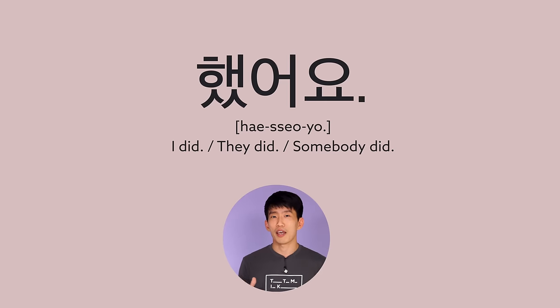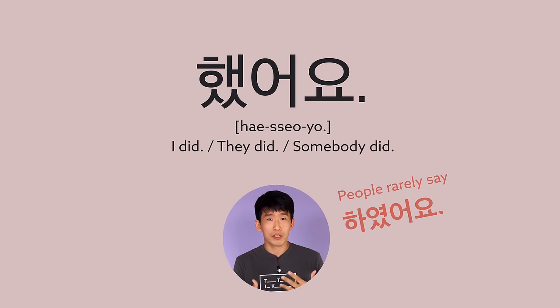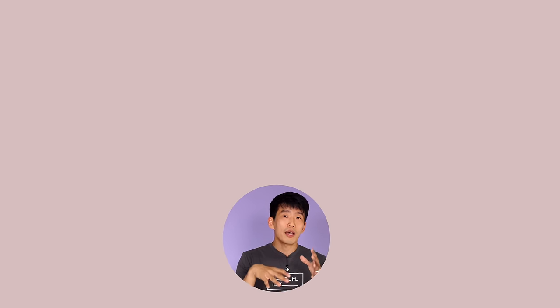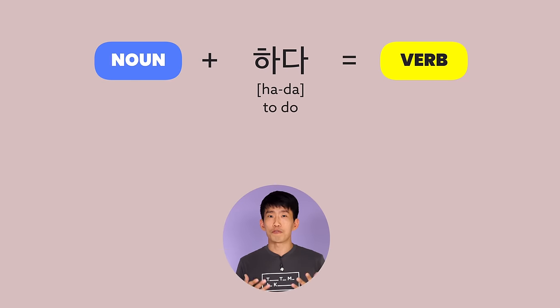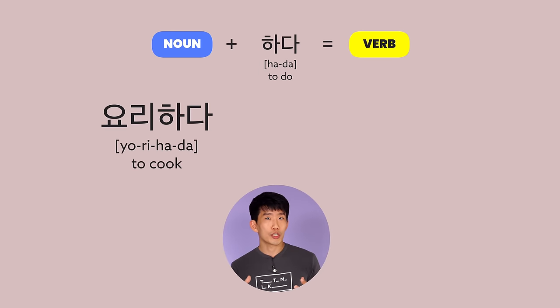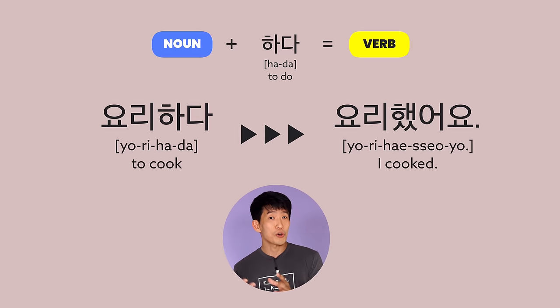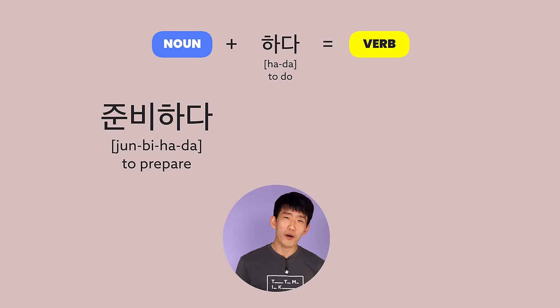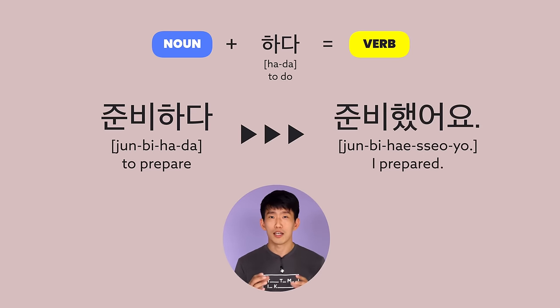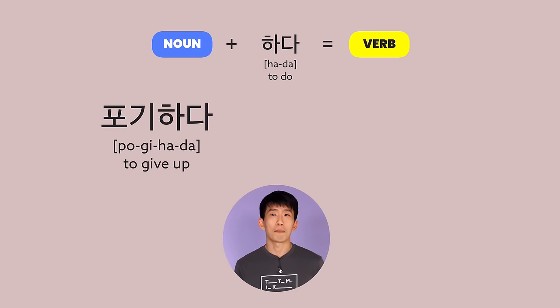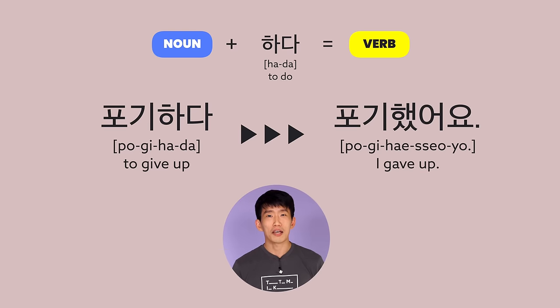Now let's look at 하다 changing to 했어요. Originally it's 하 plus 이었어요, and it becomes 했어요, but people rarely say 하였어요 in daily spoken Korean, so just remembering 했어요 is enough. As introduced in the present tense video, 했어요 can be combined with many nouns to form new verbs: 요리하다 (to cook) → 요리했어요, 준비하다 (to prepare) → 준비했어요, and 포기하다 (to give up) → 포기했어요.